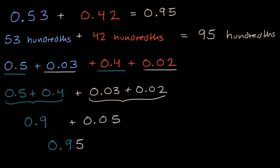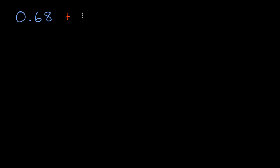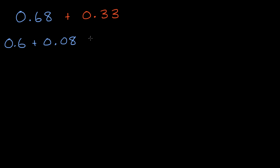Let's do another example, one that's a little bit more involved. So let's say I want to add 68 hundredths to 33 hundredths. What is this going to be? Pause the video and see if you can figure it out on your own. There are a couple of ways to think about it — let's split up the tenths and the hundredths. We can rewrite the first number as six-tenths plus eight-hundredths, and the second number as three-tenths plus three-hundredths.